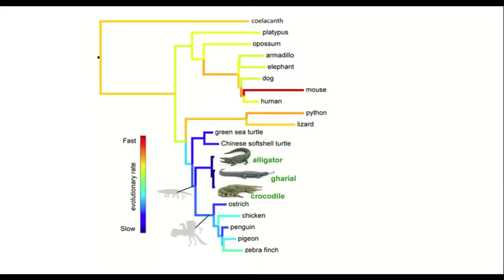As it turns out, crocodiles are the closest living relatives of birds, sharing a common ancestor that lived around 240 million years ago and also gave rise to the dinosaurs. Crocodilians are actually more closely related to birds and dinosaurs than they are to other reptiles — for example, lizards, snakes, and turtles — as a recent genetic analysis done by scientists at UC Santa Cruz confirms.